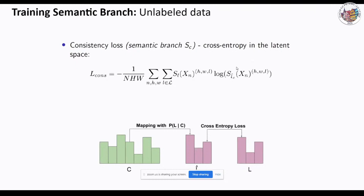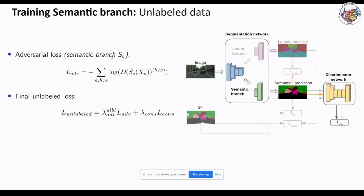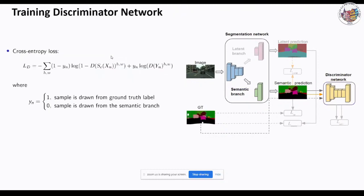Having mapped the semantic probability distribution to the latent probability distribution, the consistency loss is computed as a cross-entropy loss between the predictions of the latent branch and the maps constructed from the semantic branch. By optimizing this loss, the semantic branch is encouraged to produce semantic classes that map to highly probable latent classes. The second loss term is the adversarial loss, the same used for the labeled data. The discriminator is optimized using cross-entropy loss with two sample classes: class 0 for maps from the semantic branch, and class 1 for ground-truth maps.